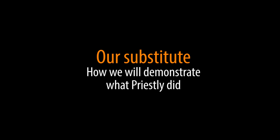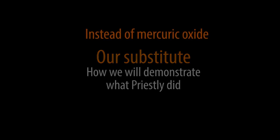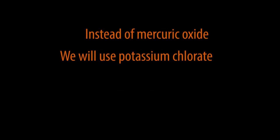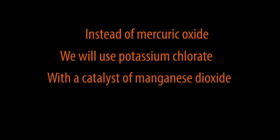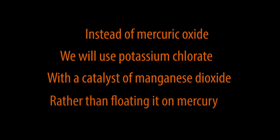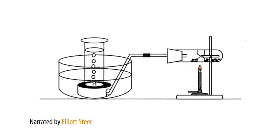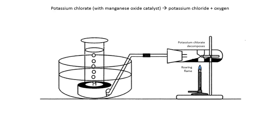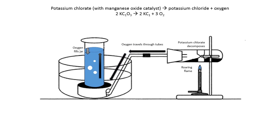Now we're going to give you a live demonstration of Joseph Priestley's famous experiment. Instead of using mercuric oxide, we will use potassium chlorate and the catalyst manganese dioxide. Rather than floating it on mercury, we'll heat it separately and let the produced oxygen rise through the water into a gas jar. First of all, we will turn the Bunsen burner to a roaring blue flame. This will gradually heat the potassium chlorate until it decomposes into potassium chloride and oxygen. The oxygen will then travel through the tubes and into the water bowl, where it will rise to fill the gas jar. As the water is being pushed down, the water level will rise in the bowl.